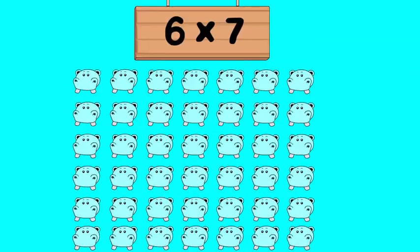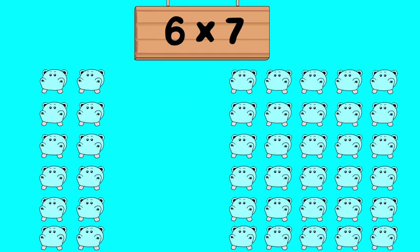Let's try using the Distributive Property to find 6 times 7. Break 7 apart into 2 plus 5. Multiply each addend by 6.